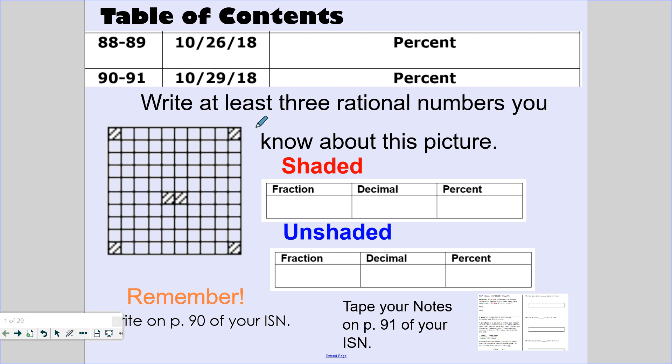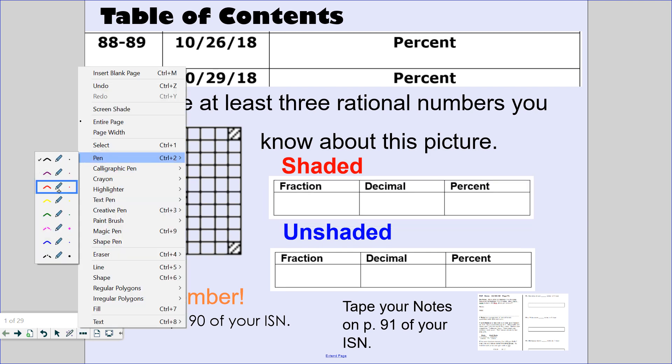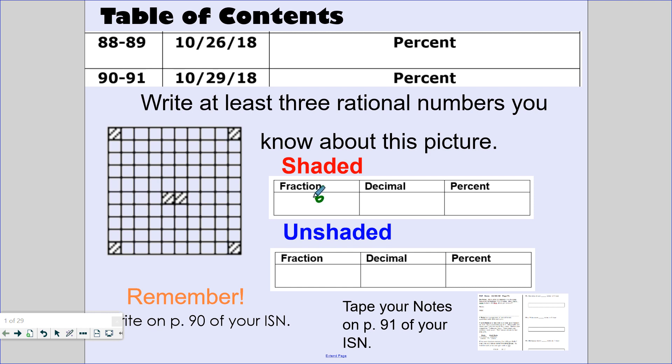This is a 10 by 10 grid. I can say six out of a hundred are shaded, or that's six hundredths or six percent. How many are unshaded then? Ninety-four hundred are unshaded, or ninety-four hundredths, or ninety-four percent.